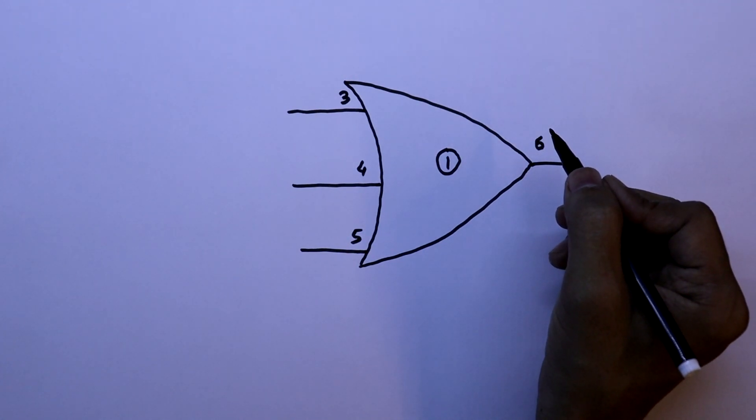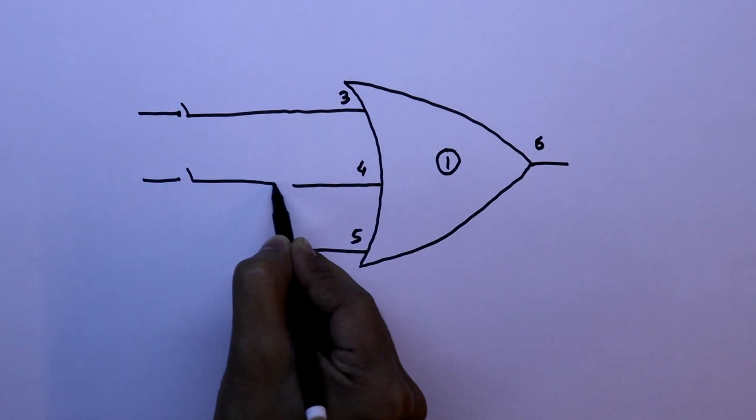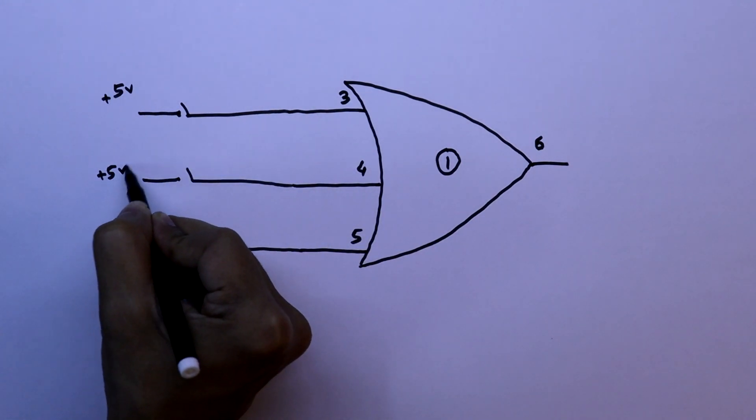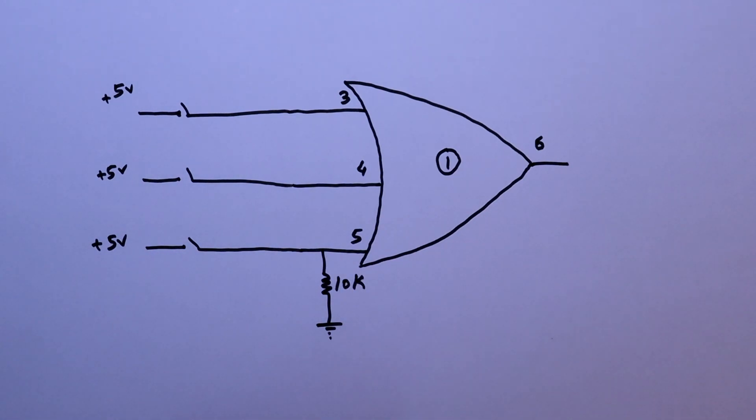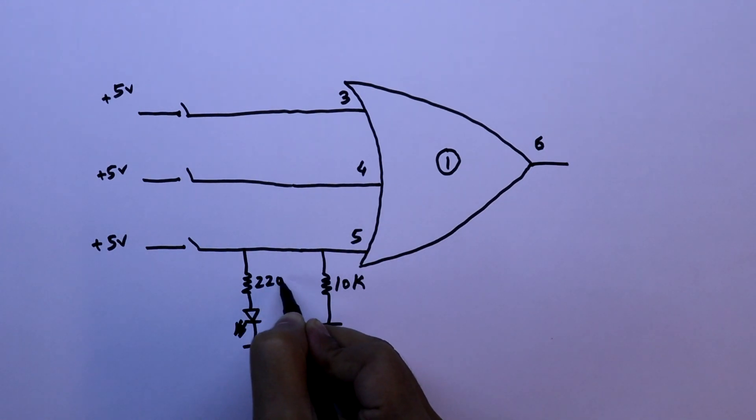To provide the inputs, we are using switches. The other side of each switch is connected to plus 5V. With the input pins, we have to use pull-down resistors. The value of the pull-down resistor is 10 kilo-ohms. To see the input, we are connecting LEDs. The value of the series resistor is 220 ohms.